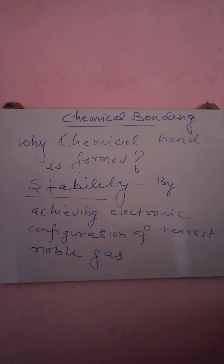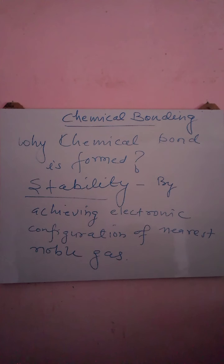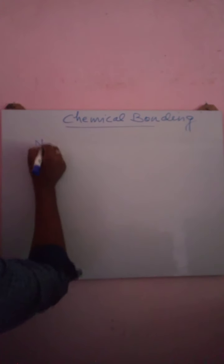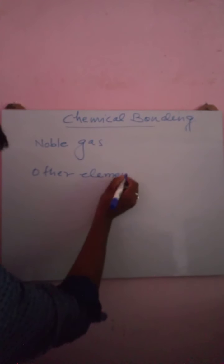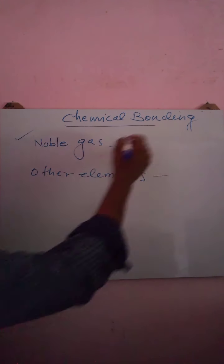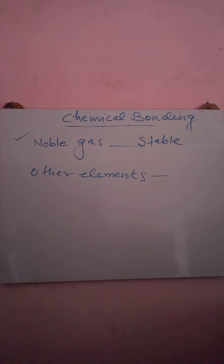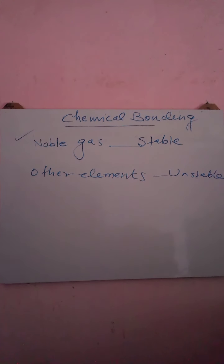An atom can become stable by achieving the electronic configuration of the nearest noble gas. An atom wants to become like a noble gas because in the entire periodic table, only noble gases are stable. Let's see the condition of noble gases and other elements in the periodic table. Noble gases are stable, while other elements except noble gases are unstable.